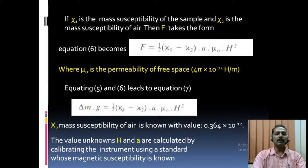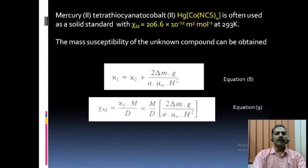Mercury tetra thiocyanate cobalt is often used as a solid standard with magnetic susceptibility 206.6 into 10 raised to minus 12 at 293 Kelvin. The mass susceptibility of the unknown compound can be obtained by equation 8: chi 1 is equal to chi 2 plus 2 into delta M into G divided by A into mu 0 into H square. By equation 9, we can find out the magnetic susceptibility chi M is equal to chi 1 into molecular mass divided by density of the sample.